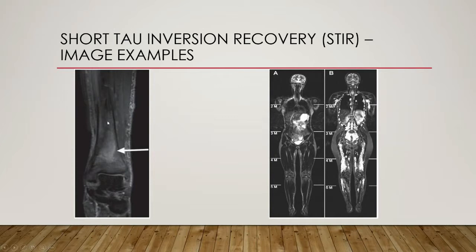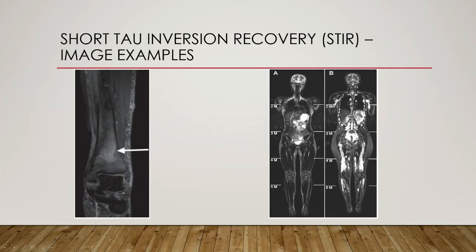Here, the left image is a STIR image that shows an insufficiency fracture of the distal tibia with an extensive area of high signal intensity in the bone marrow — you can see a brighter area. The right one is a whole-body MRI using STIR sequences. Subject A shows a normal subject, and B shows a patient with neurofibromatosis 1 who has multiple lesions in the body. Most pathological tissues have high proton density and long T1 relaxation and T2 decay, so STIR images show lesions as regions of high signal intensity, as seen in the figure.